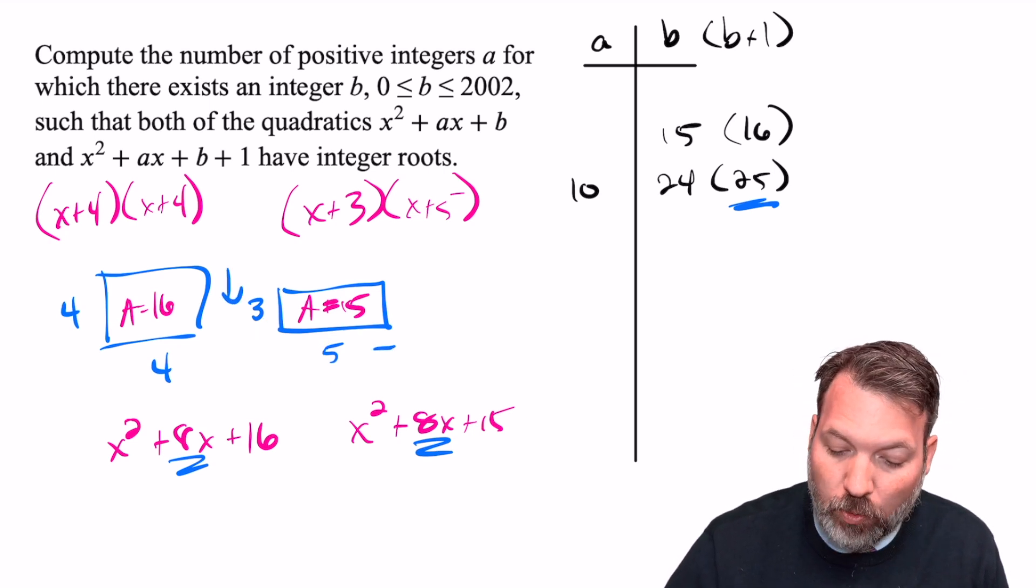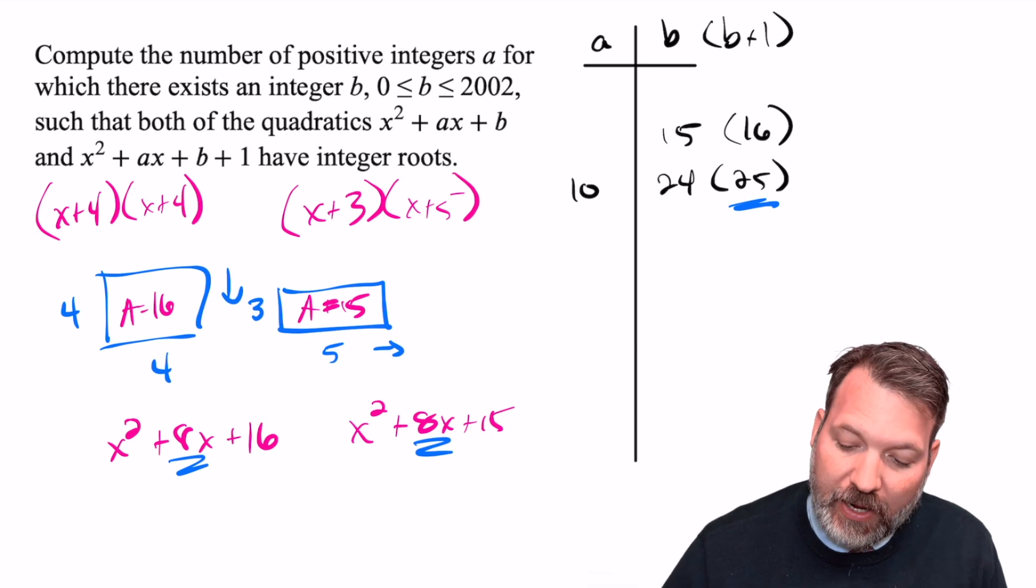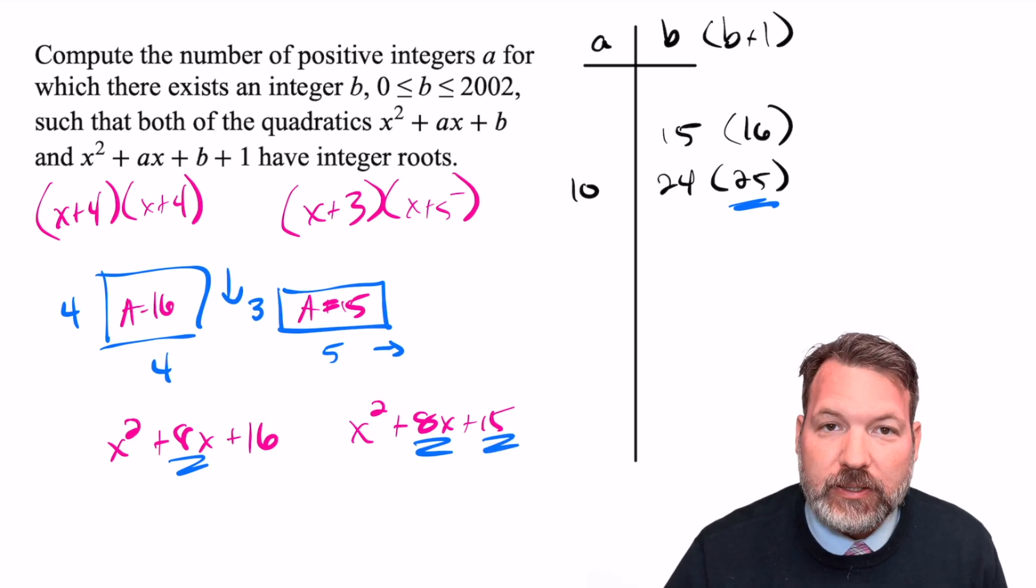But when we do that one unit shorter and one unit longer, it's going to give us that area that is one unit less. And so the next time that happens, A is equal to eight. And now I have a little bit of a pattern.